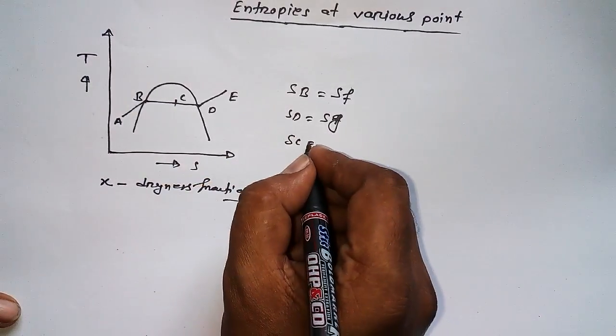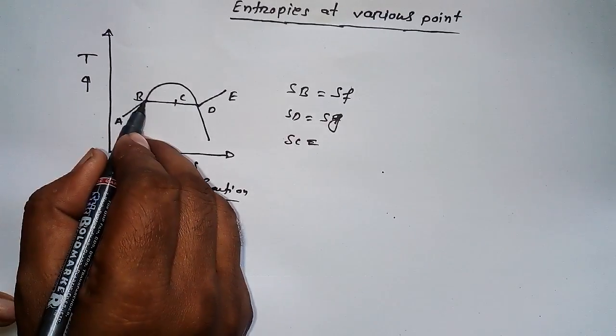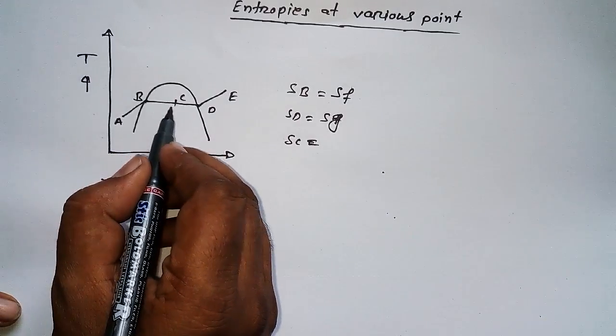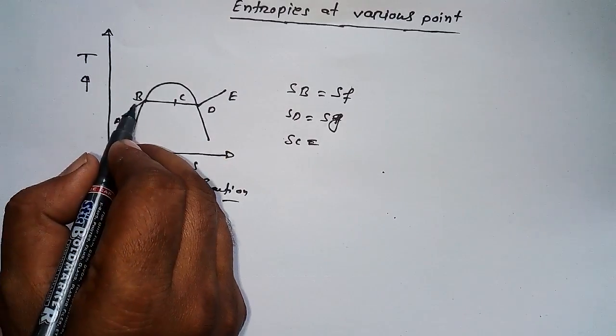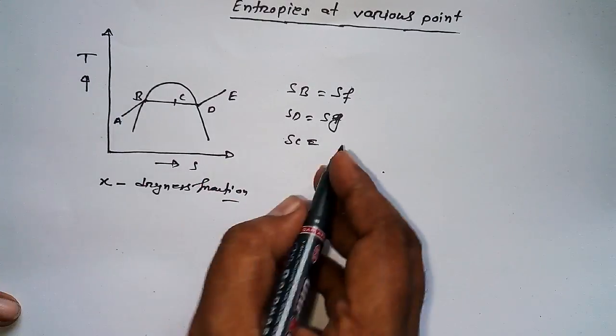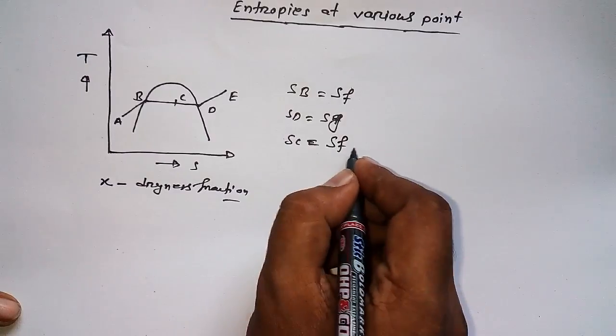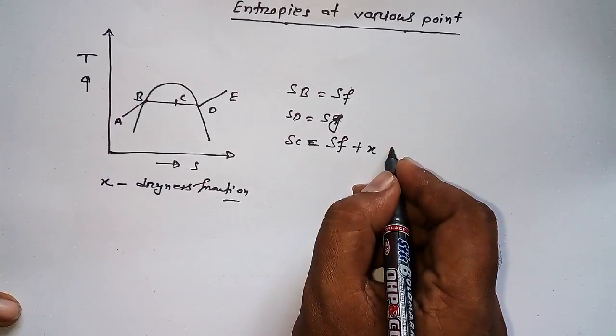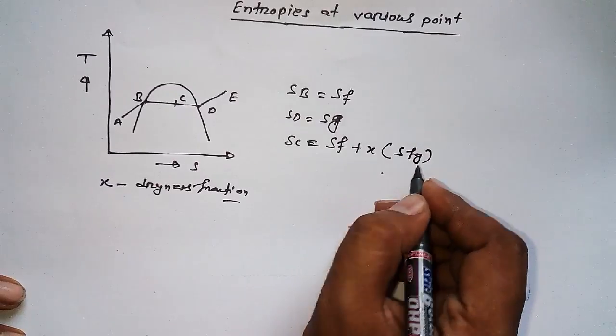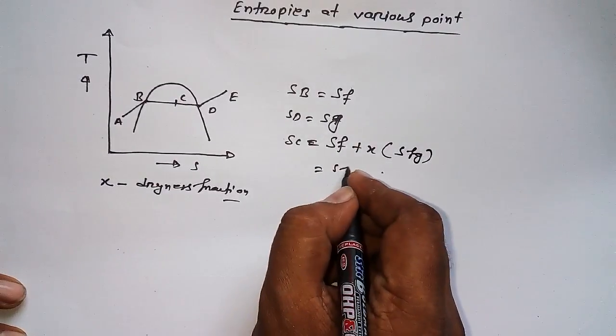If I wanted to find out entropy at this point, S_C is equal to - here if I wanted to calculate S_C, then I have to consider one thing: S_C will be greater than S_B. That's why S_f plus x times S_fg. I can write this equation like this: S_f plus x times S_fg.